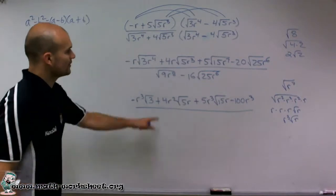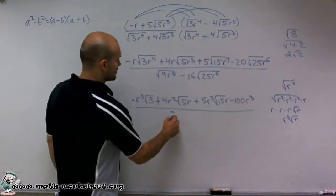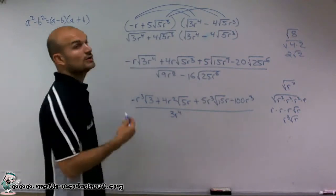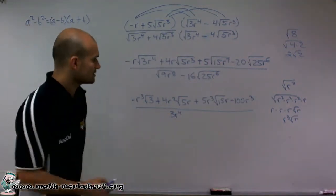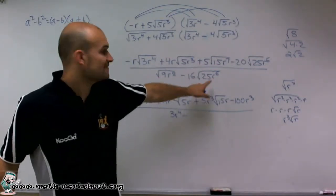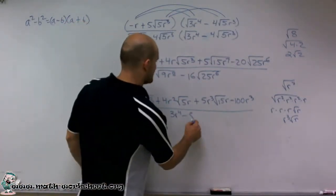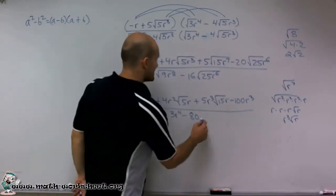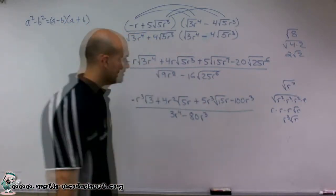And I'm going to take that all over the square root of 9, which is 3, r to the eighth gives me r to the fourth, minus the square root of 25 is 5. 5 times negative 16 is negative 80. The square root of r to the sixth we can rewrite as r cubed.